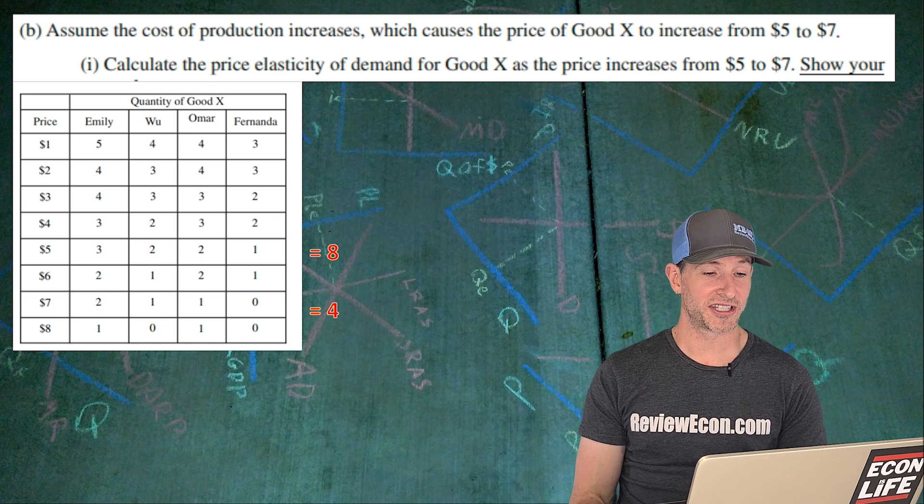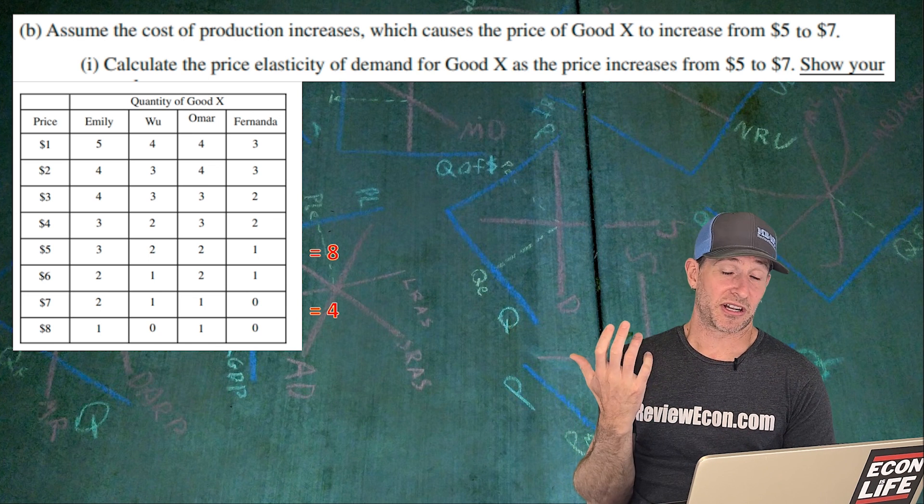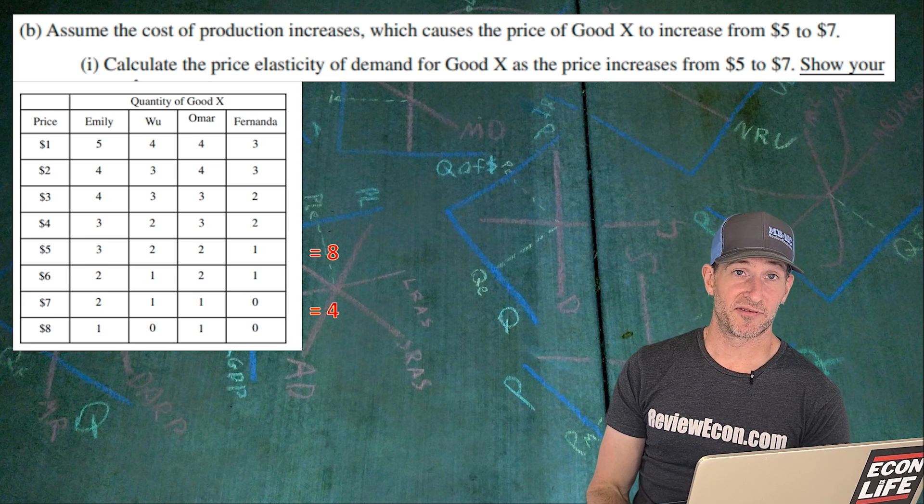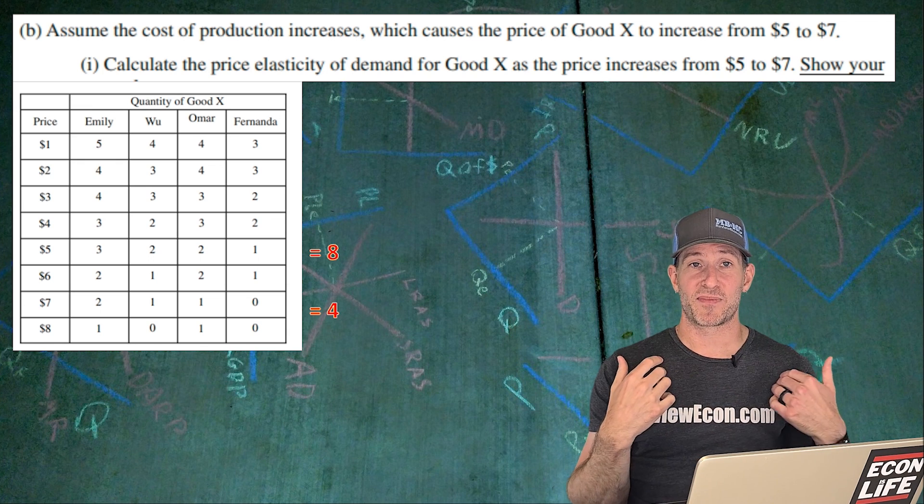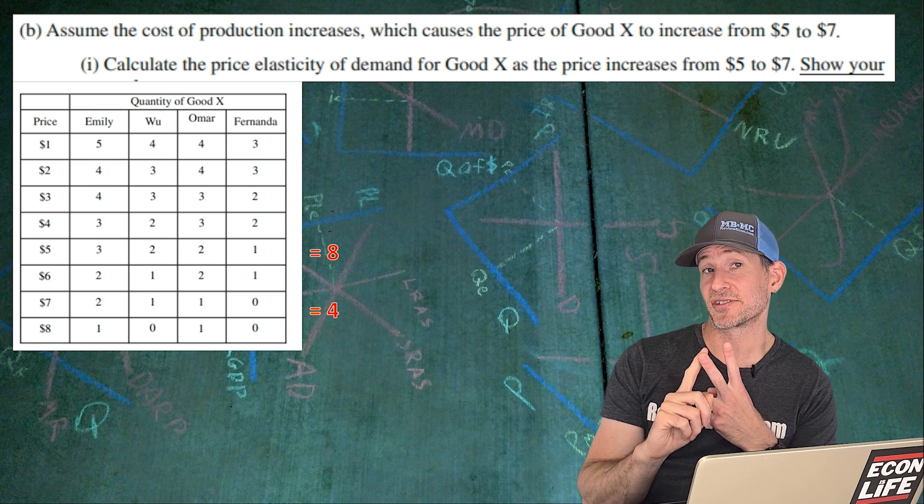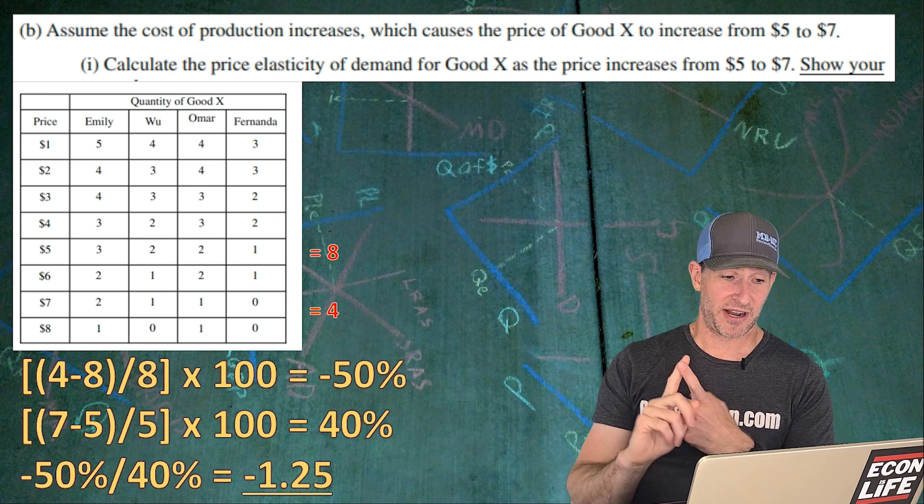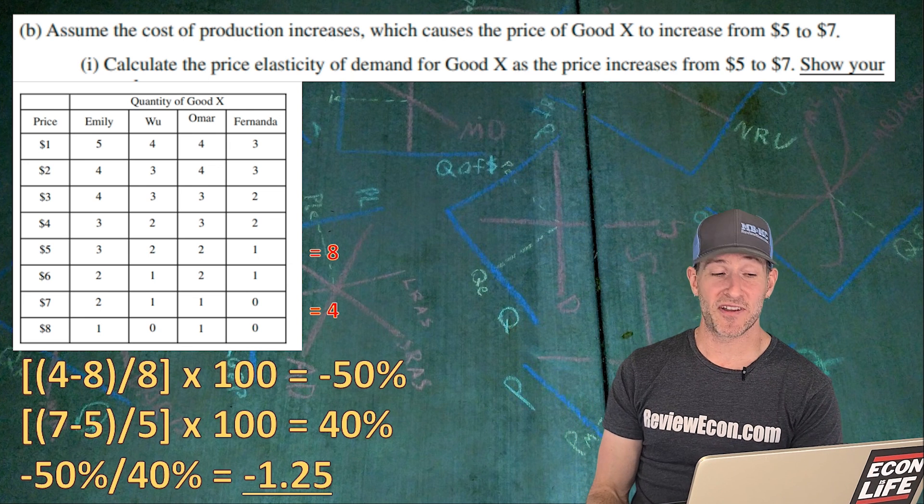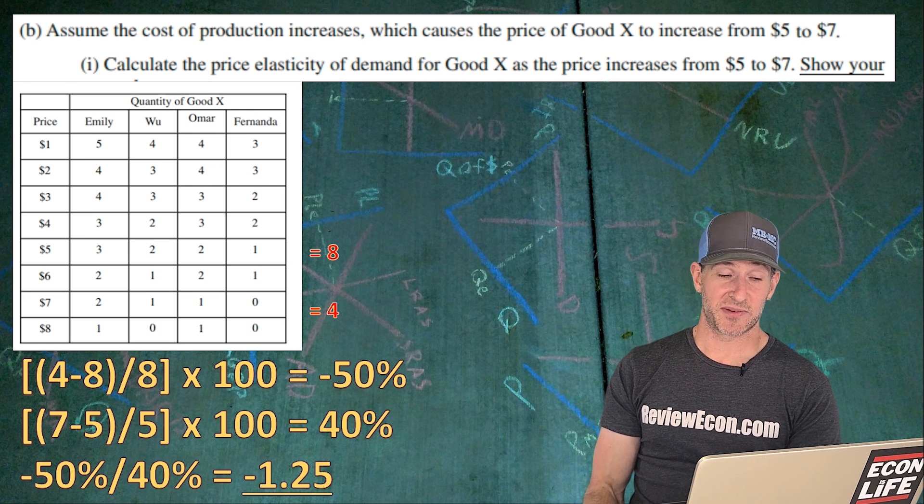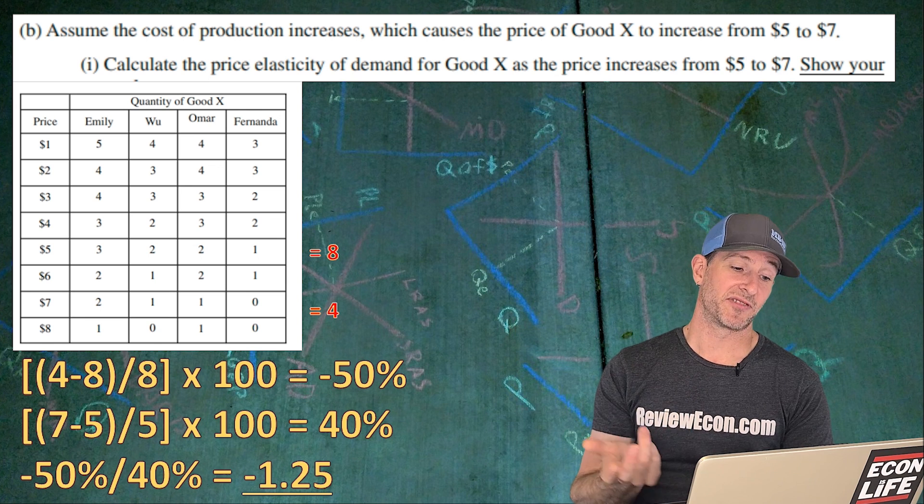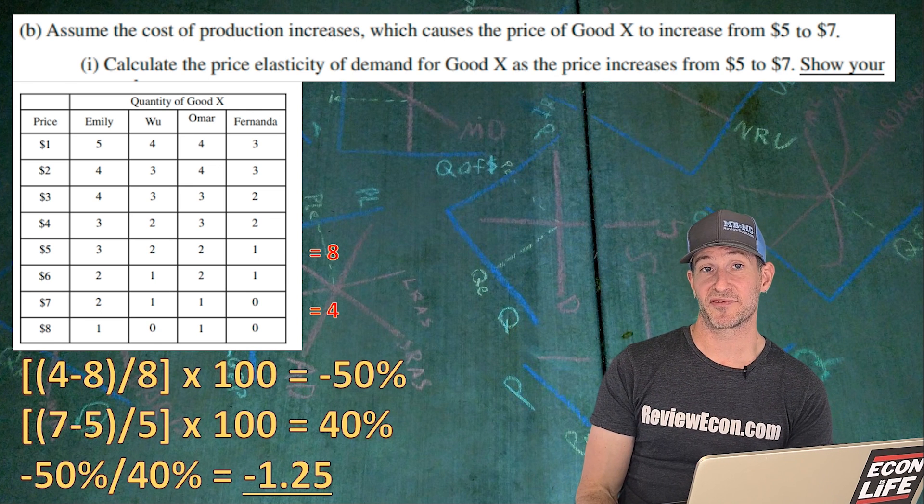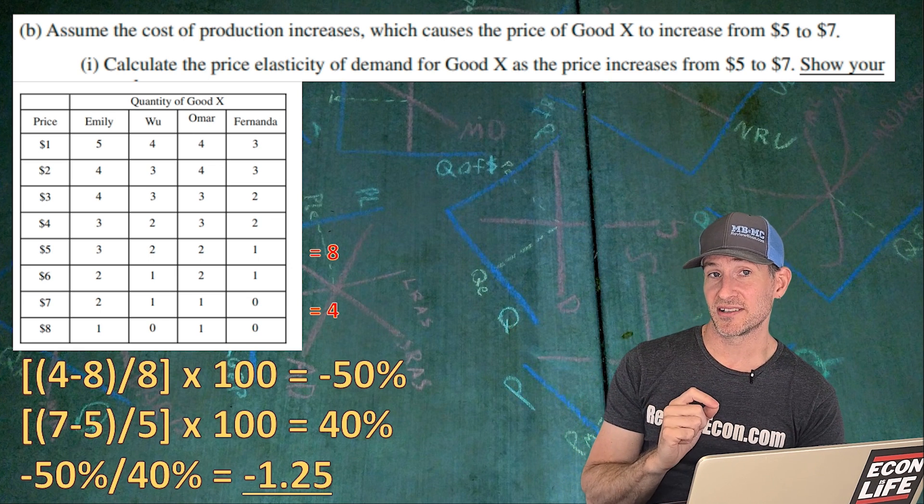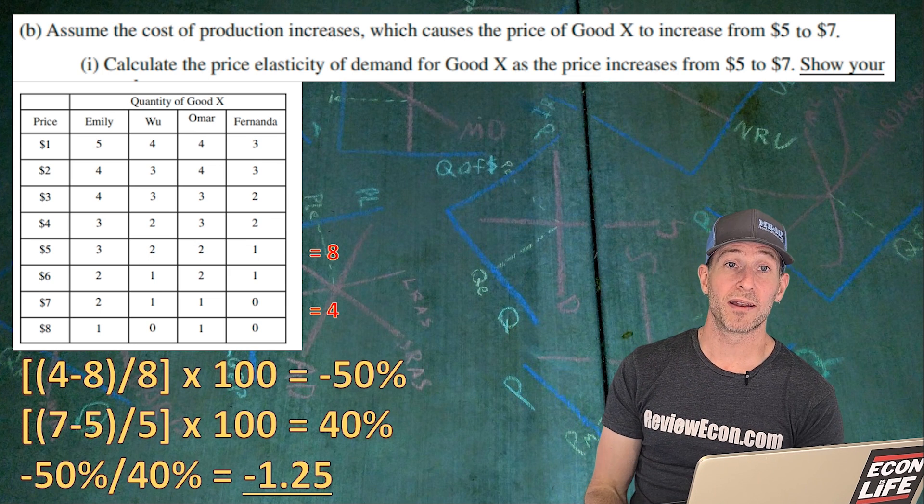And so we're going to calculate our percentage change of quantity. Remember quantity is always on top divided by the percentage change of price to calculate the percentage change. My preferred method and the preferred method on the AP exam is new minus old divided by old times a hundred. So let's go ahead and do that. We have four minus eight divided by eight times a hundred gives us a percentage change of quantity of negative 50%. And then the percentage change in price is seven minus five divided by five times a hundred gives us a percentage change of price of 40%. So negative 50% divided by 40% gives us a coefficient, an elasticity coefficient of negative 1.25.